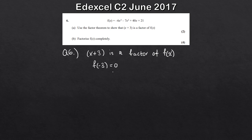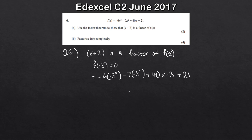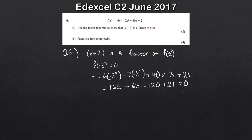I'll write everything in full. So f of minus 3, that'll be minus 6 times minus 3 cubed, and so on. Simplifying: minus 6 times minus 3 cubed gives 162, this will give me minus 63, 40 times minus 3 is minus 120, and then add 21 on at the end. Plug all this into your calculator - you don't need to do it by hand. All of that, when you put it in your calculator, is equal to 0, which is exactly what we wanted. Therefore, x plus 3 is a factor of f of x.